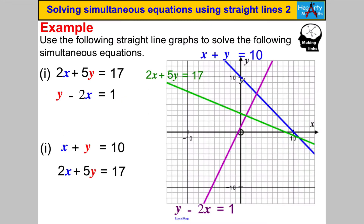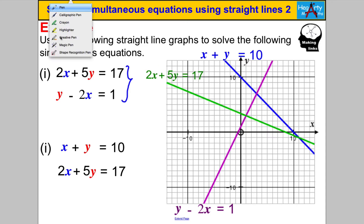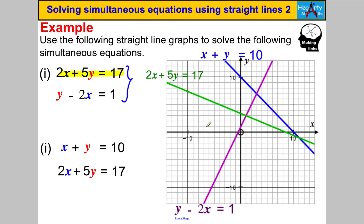Let's go through and try some questions. If you feel like you can do these, pause the video and do them yourself. It says: use the following straight lines to solve the following simultaneous equations. To solve these two, I have to look at the graph and identify the two straight lines. The equation 2x + 5y = 17 is this green line here.